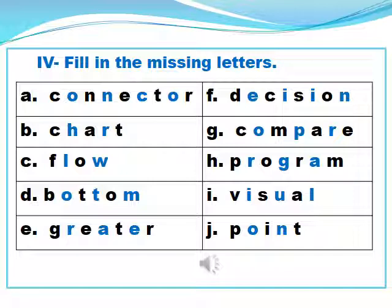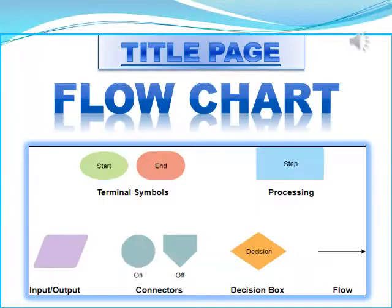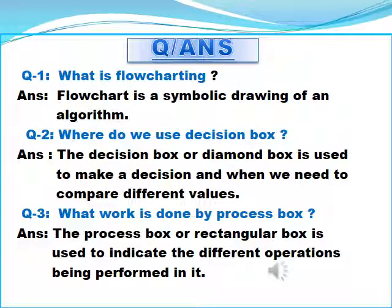Dear students, book work has been completed. Now we will move on to copy work. I hope all of you have done your copy work for the previous chapter. Those who have not done it yet have to complete it first. Now you will prepare for the written work of chapter flowchart. All work has to be done sequentially. First, fill your index. After the index, make the title page of the chapter. After the title page, put the heading of question answers on the very next page.